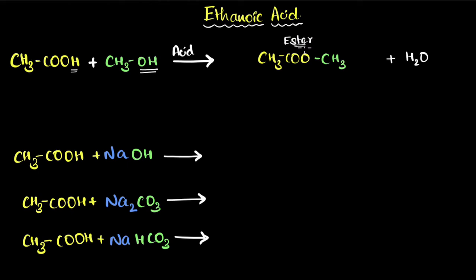An ester is any molecule in which you have a COO group, and on either side you have some carbon chains. On both sides you can have long carbon chains if you want.